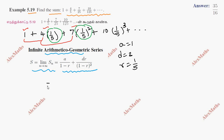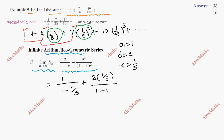Now substitute the values: 1 by (1 minus 1 by 5), plus d which is 3, into r which is 1 by 5, whole divided by (1 minus 1 by 5) whole square.